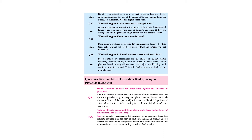Question 17: what will happen if apical meristem is damaged or cut? Apical meristems are found at the tips of root, shoot, branches, and leaves. They form the growing parts of the root and stem. If they are damaged or cut, growth in length of that part will cease to occur — it will stop growing.